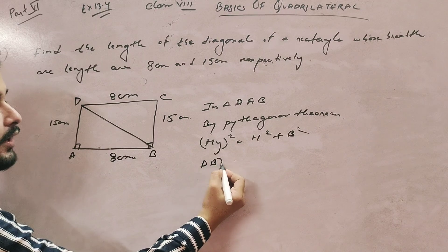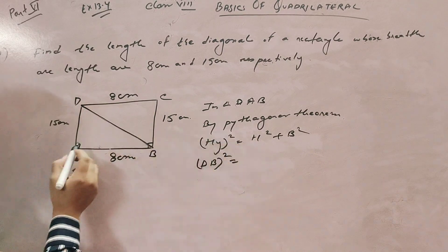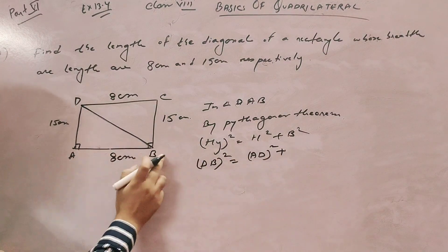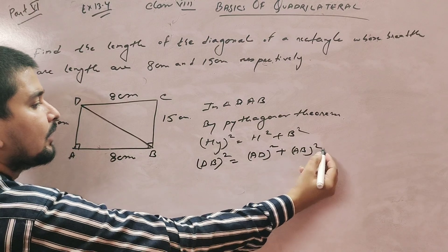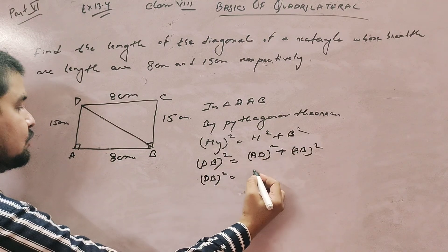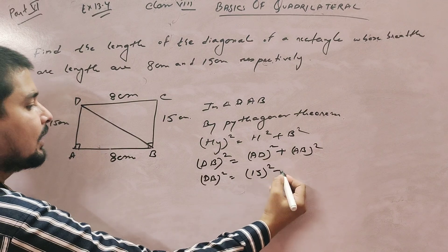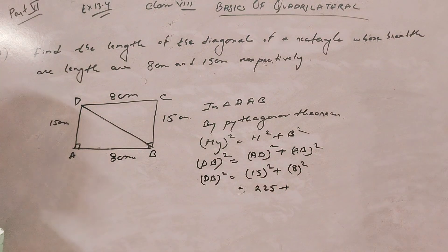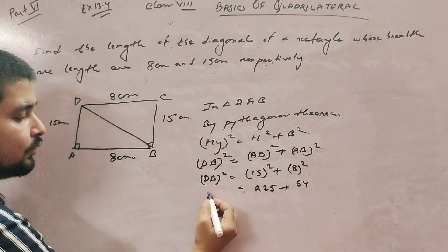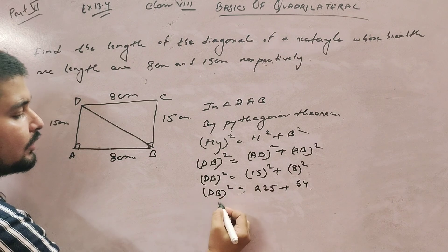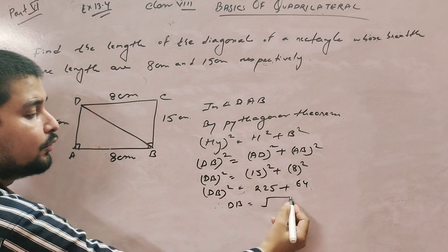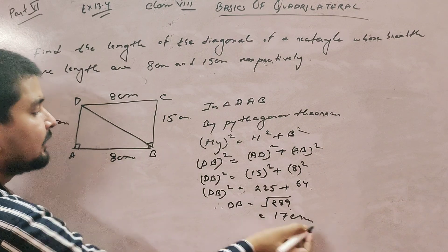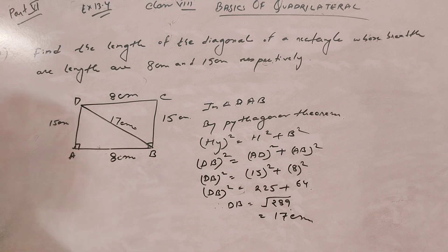DB is the hypotenuse, so DB squared equals AD squared plus AB squared. Base squared is 15 × 15 = 225, and 8 × 8 = 64. Therefore, DB equals root under 225 plus 64, that is root of 289, which is 17 centimeter. So the length of the diagonal is 17 centimeter.